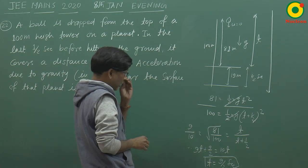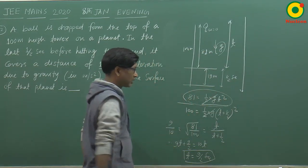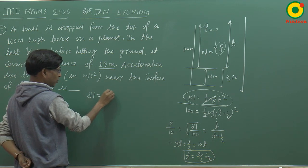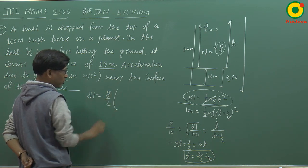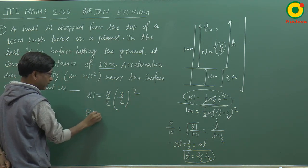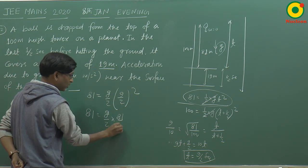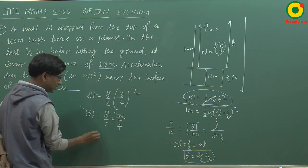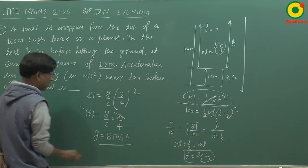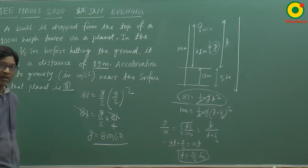T का value आ गया — अब पूछा गया है acceleration due to gravity यानि G का value। किसी एक equation में रख देते हैं — ऊपर वाले में: 81 = G/2 × (9/2)²। तो 81 = G/2 × 81/4। यह 81 और 81 cancel हो गए। G का value आ गया 8 meter per second square। Correct answer आएगा 8 — integer test सवाल है तो integer value है 8।